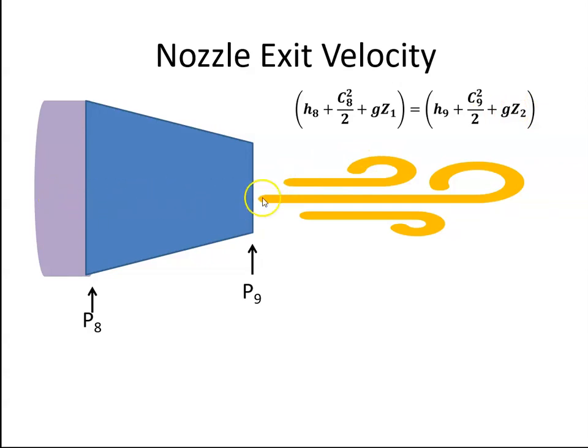We're going to assume the nozzle is horizontal. So therefore, the potential energy is not going to change. So we can cancel that out. So I'm left with this equation.